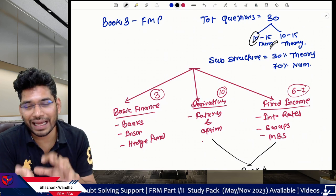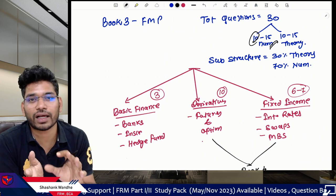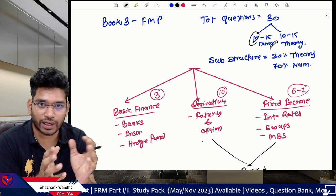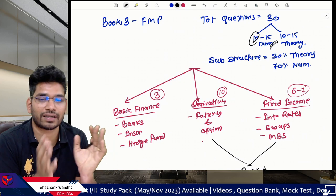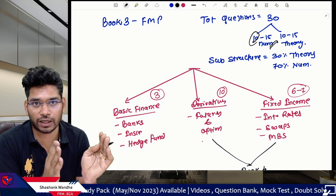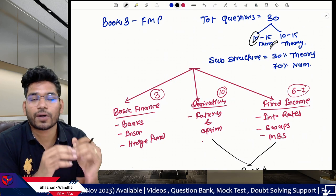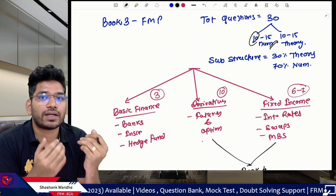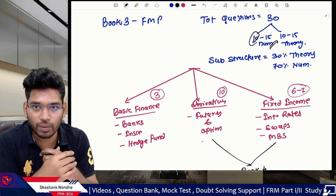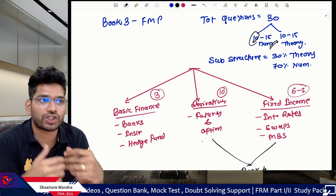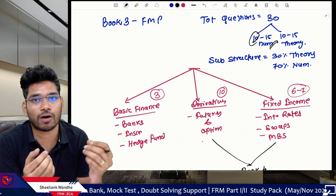My expectation is that 10 numerical questions is more likely, so I'm giving you the range of 10 to 15 numerical questions. The subject structure is approximately 30 percent theory topics and remaining 70 percent numerical topics, where you need to do calculations or apply formulas.